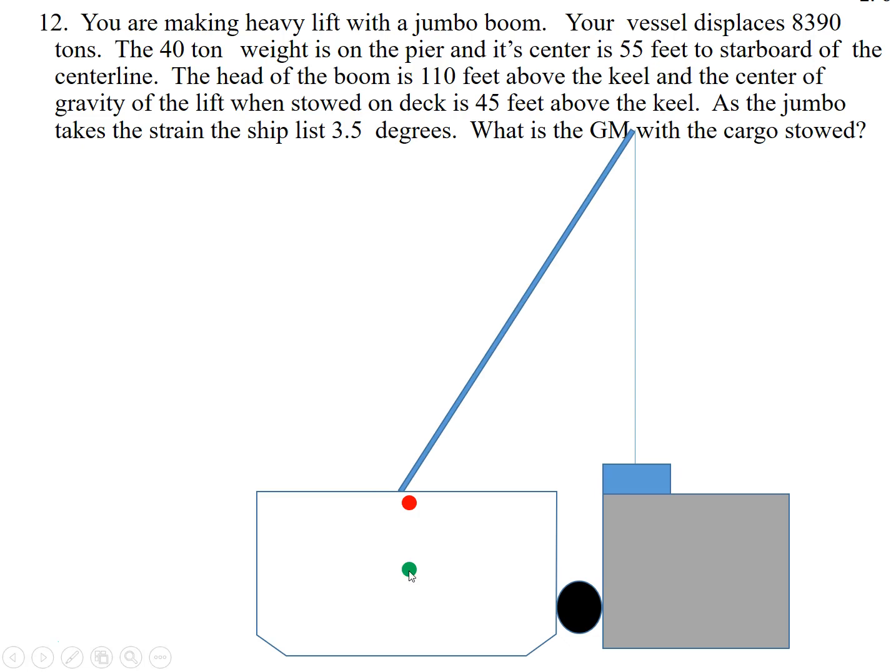So when we start this, here's our center of gravity. This is our metacenter. So the green dot is our center of gravity, and the red dot is the metacenter. So this vessel has a GM. Now, you can imagine that as soon as we lift this block, this 40-ton weight, the vessel is going to feel it right here at this head block.